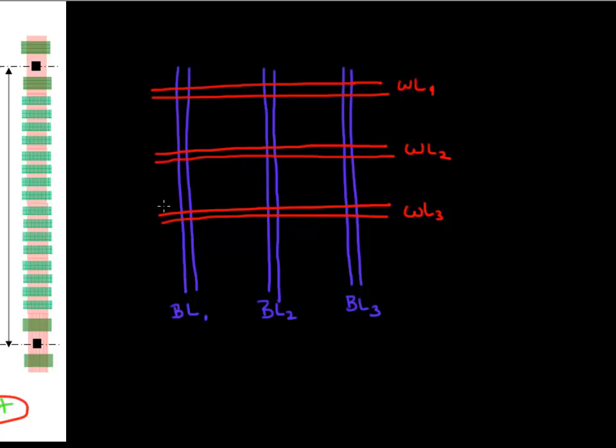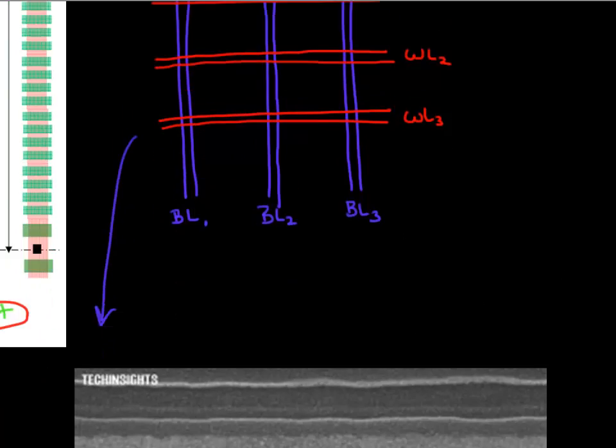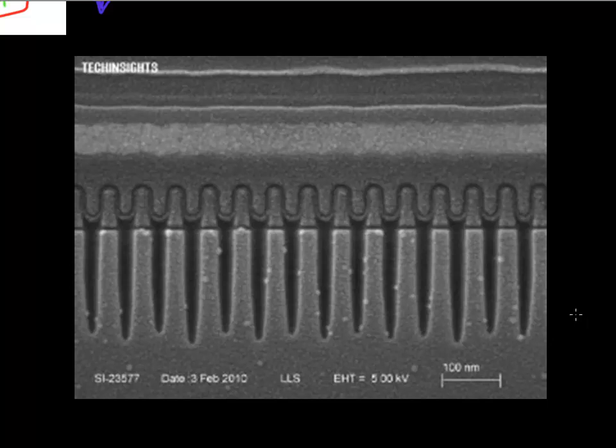So again, if you take an SEM photograph, there's a very large probability that you will land something which looks like this. So when you look at this, the first feeling that I get is they look like essentially skyscrapers, right? Each of these cells look like skyscrapers. And what you have are these bit lines. So this is bit line one, this is bit line two.